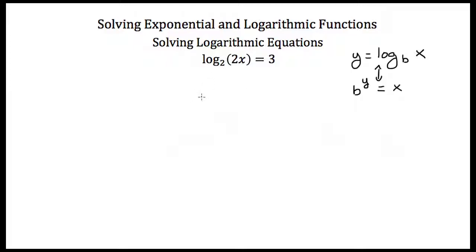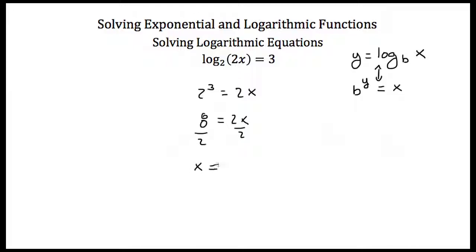So if I want to get x out of my logarithm, I'm going to rewrite the equation as an exponential. I keep my base, which in this case is 2, put it to my y power — y in this case is 3 — so I have 2 cubed equal to whatever is inside my logarithm, which is 2x. So I have 2x is equal to 2 cubed, which is 8. Divide both sides by 2 and you get x is equal to 4.